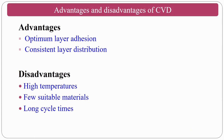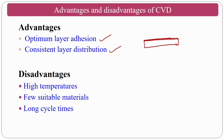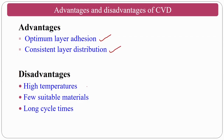The advantages of CVD include optimum layer adhesion and consistent, uniform layer distribution on the substrate. The disadvantages are: the high operating temperature (~1000°C) can cause some elements to sublimate from the composition; it is suitable for only a few materials — if a material's melting point is much below 1000°C, it is not suitable; and it has long cycle times for the coating operation.